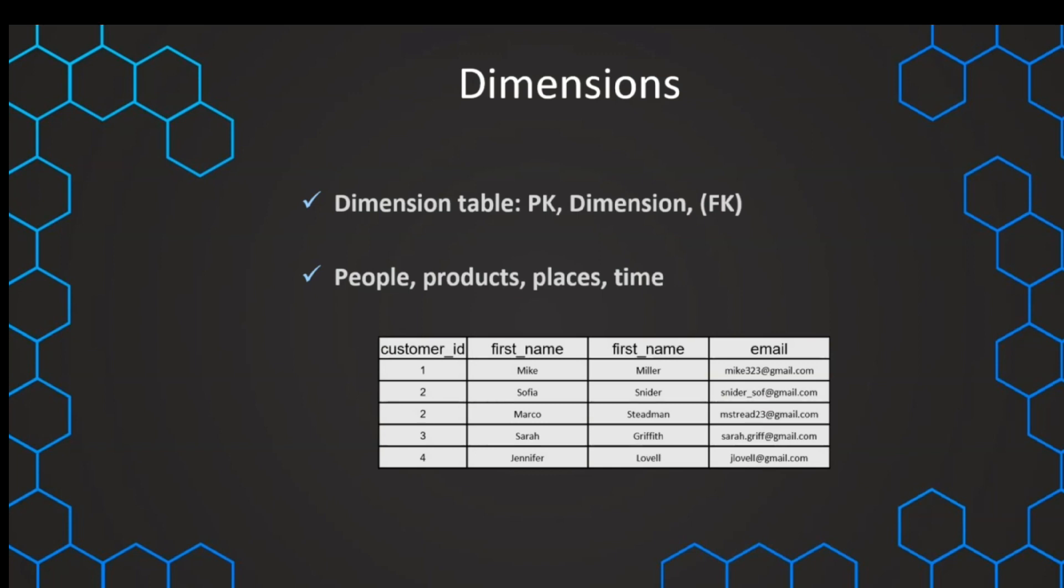For example, we can have a customer dimension. We have the customer ID, our primary key, and then we have the different dimensions in this dimension table.